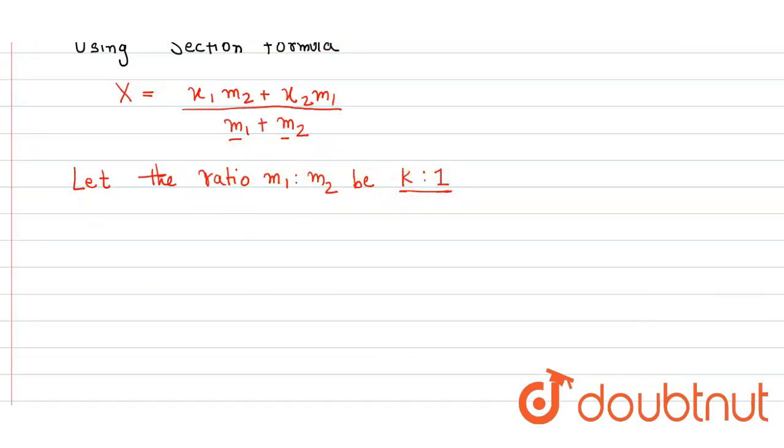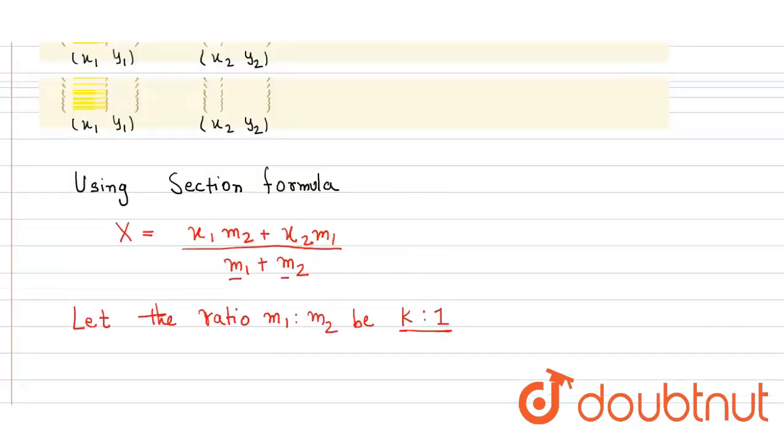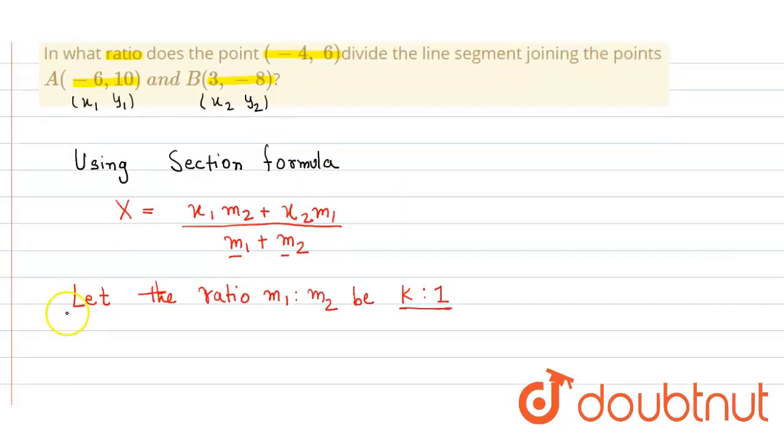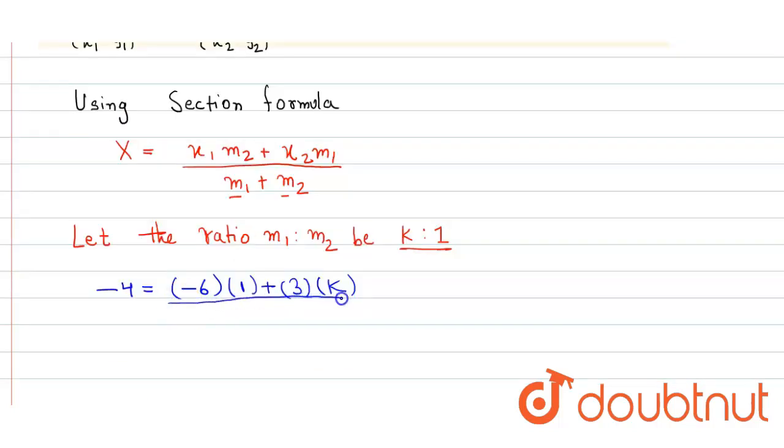So we just now simply put the values. The coordinate of x in the question is given as -4. So here it is -4 equals to x1 is -6 into m2 is 1 plus x2 is 3 into m1 is k, divided by k plus 1. Now we just simply solve it.